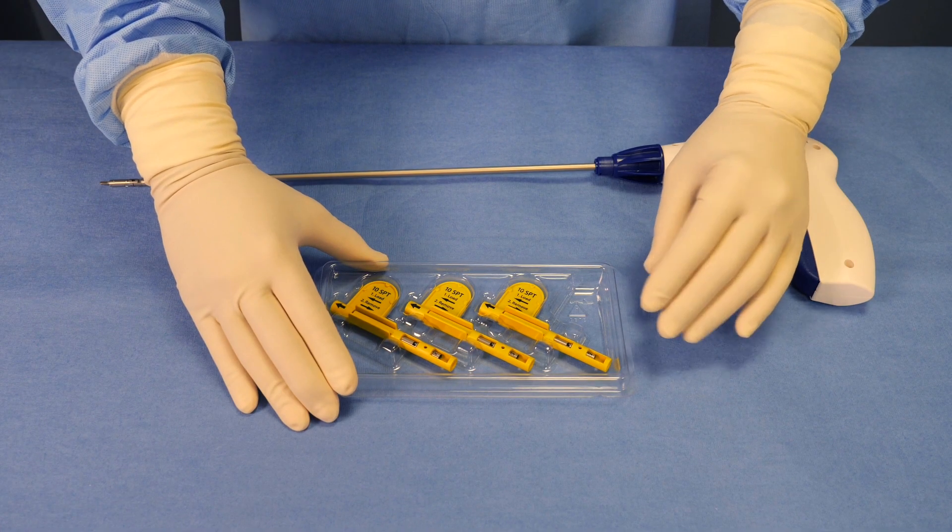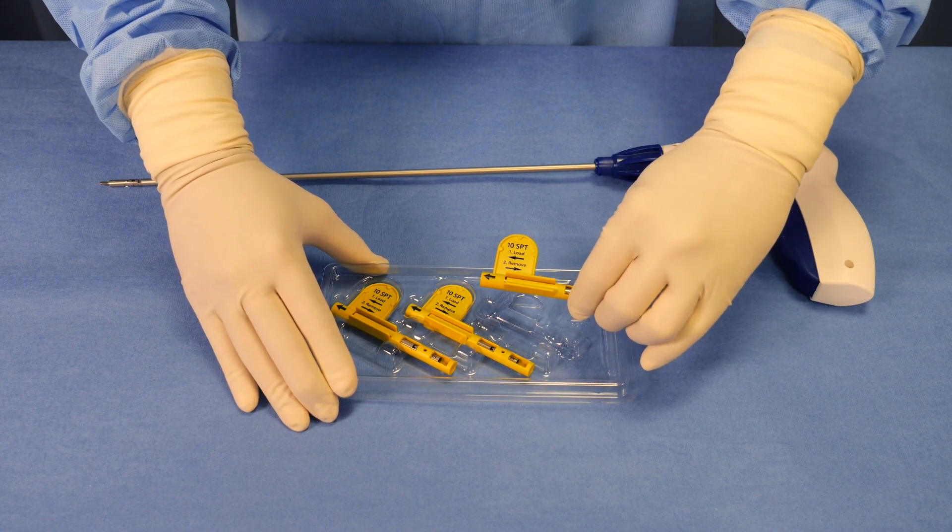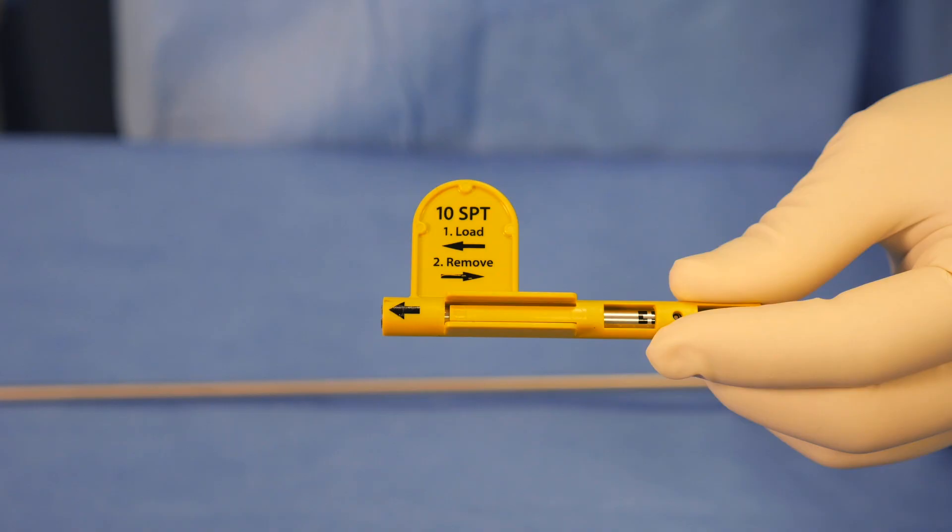First, select the appropriate reload. Remove it from the package by grabbing the distal end of the reload and lifting up. Do not grab the shipping wedge. Do not remove the shipping wedge until the reload is properly attached.